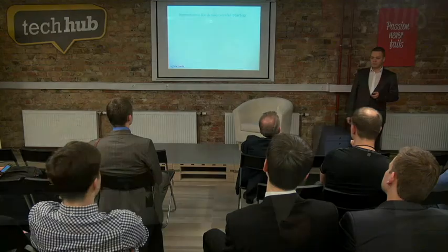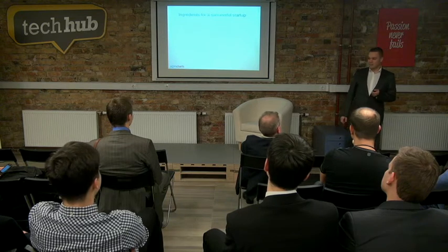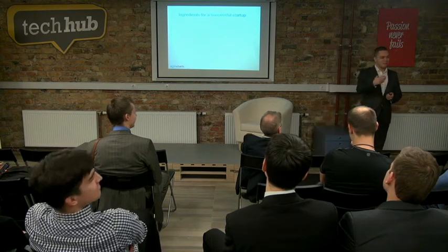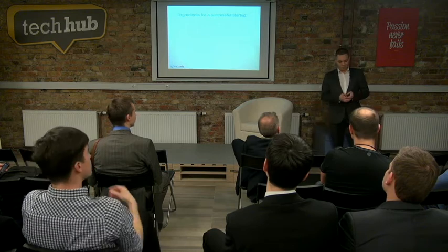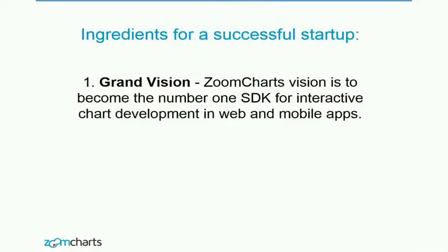Let's step back a little bit. What are the ingredients for a successful startup? Team, idea — and the third missing component? Basically, you need this grand vision. In ZoomCharts' case, our vision is to become the number one SDK for interactive chart development in web and mobile apps. It's okay to have a good vision, but vision is not enough — you need a realistic plan of execution. You need to be able to prove how you'll get from your idea to actual implementation of that vision.